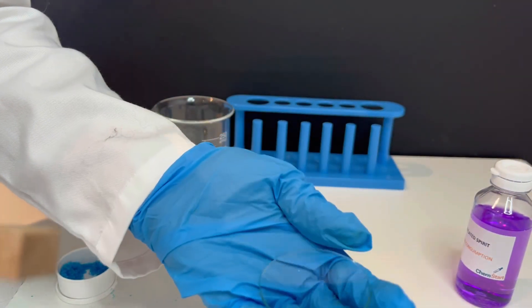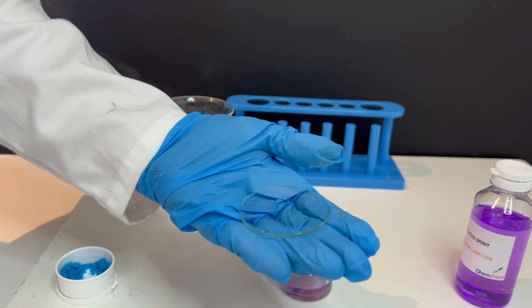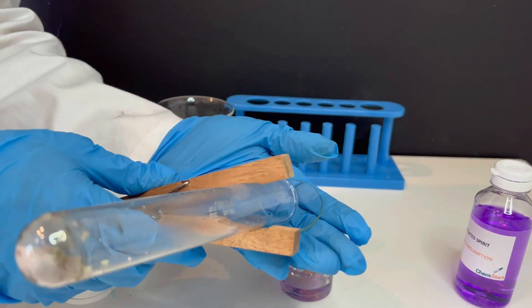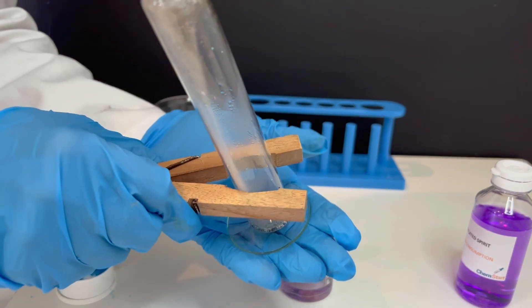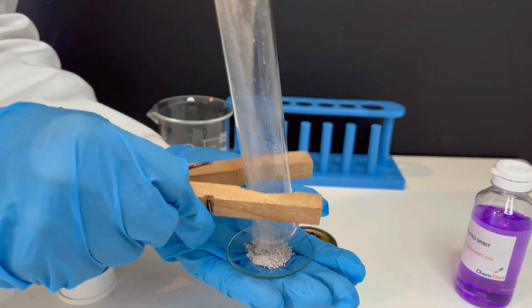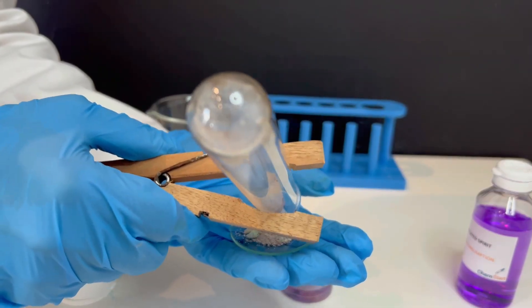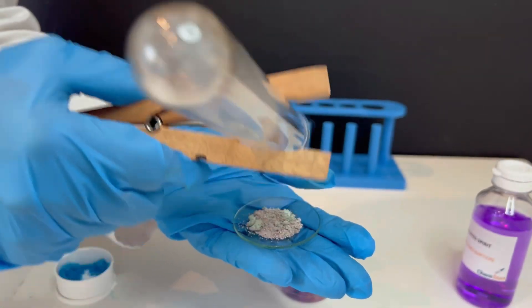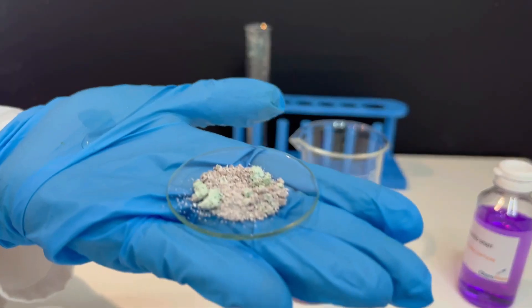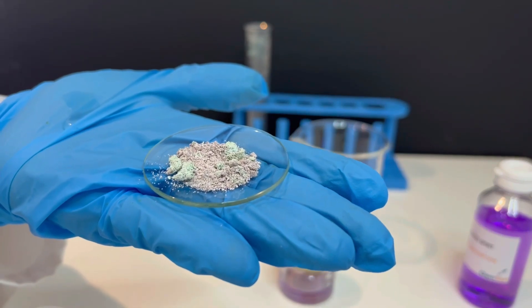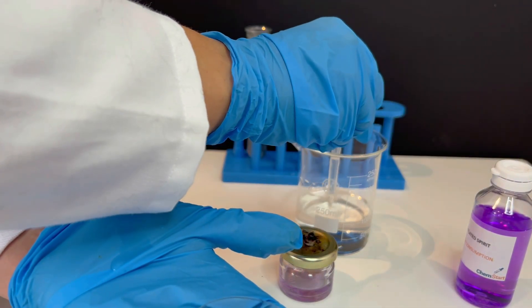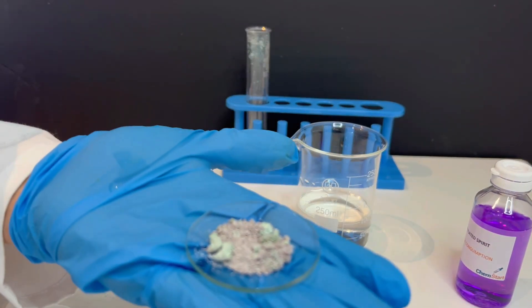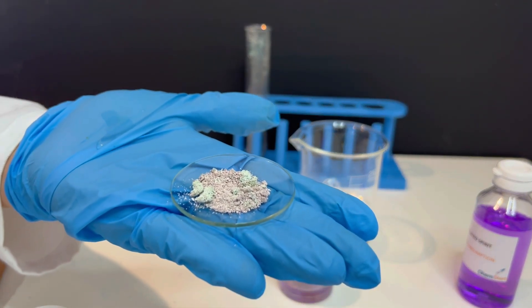Place some of the white anhydrous copper sulphate onto a watch glass. Add a few drops of water using the pipette. Look at what happens.